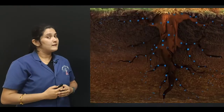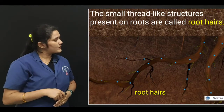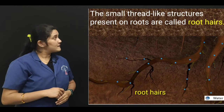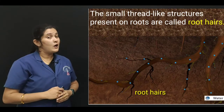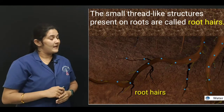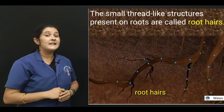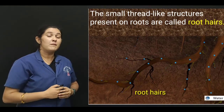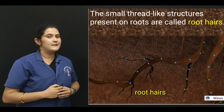Here you can observe the roots. Can you see the small thread-like structures? The small thread-like structures present on roots are called root hairs. The root hairs absorb water and nutrients from the soil.